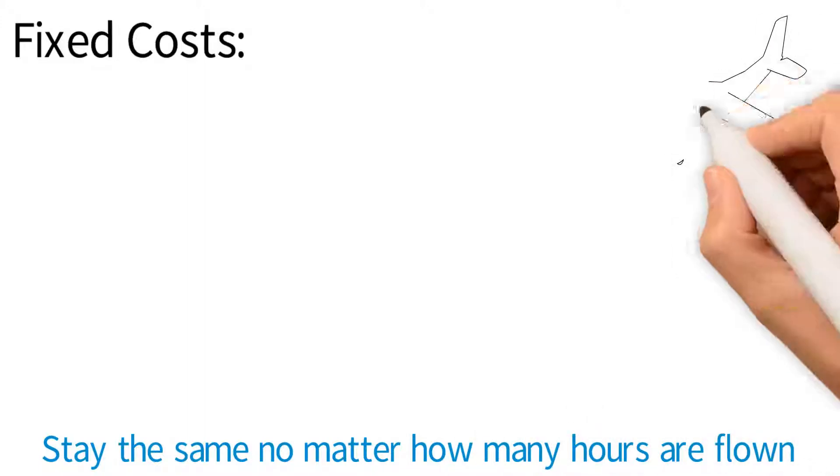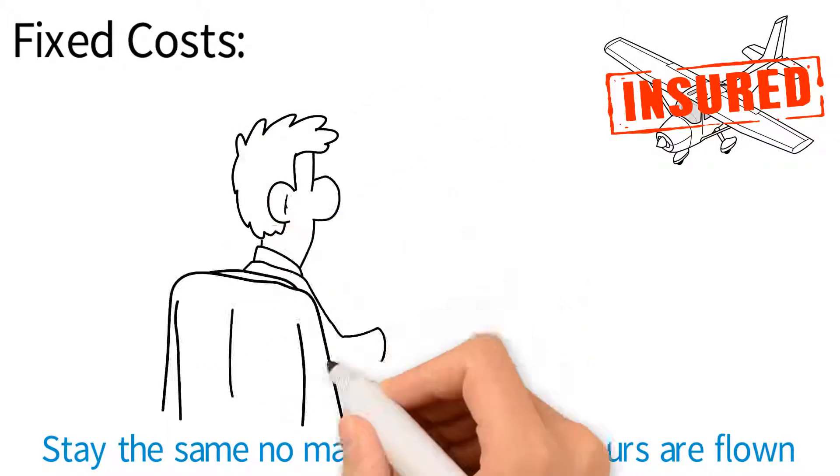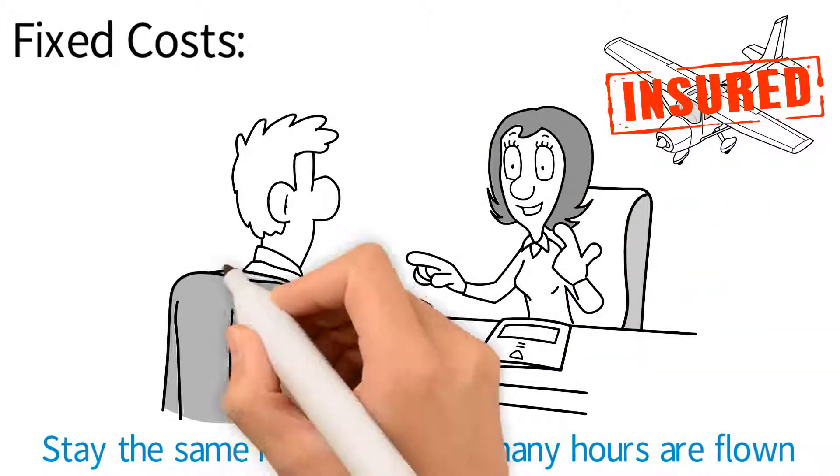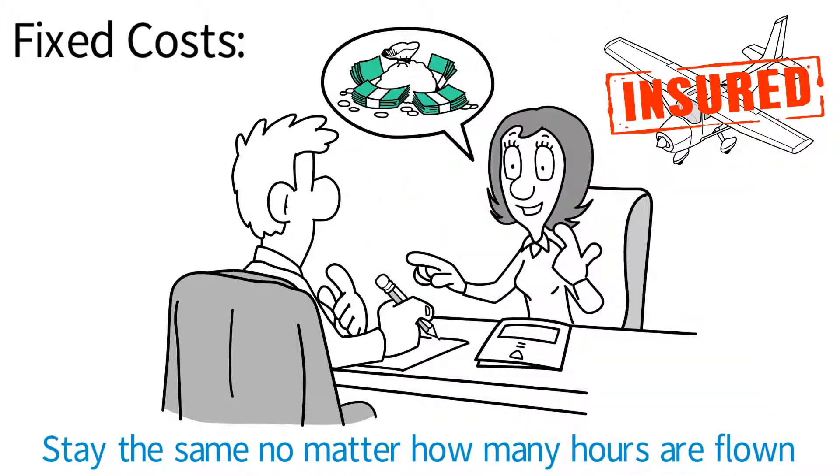Fixed costs are the type of costs that stay the same no matter how much the flight school operates its airplanes. Every airplane is insured. Every month, the insurance company wants to be paid their premium no matter how many hours the airplane has flown. The same would apply to an annual inspection and many other costs.